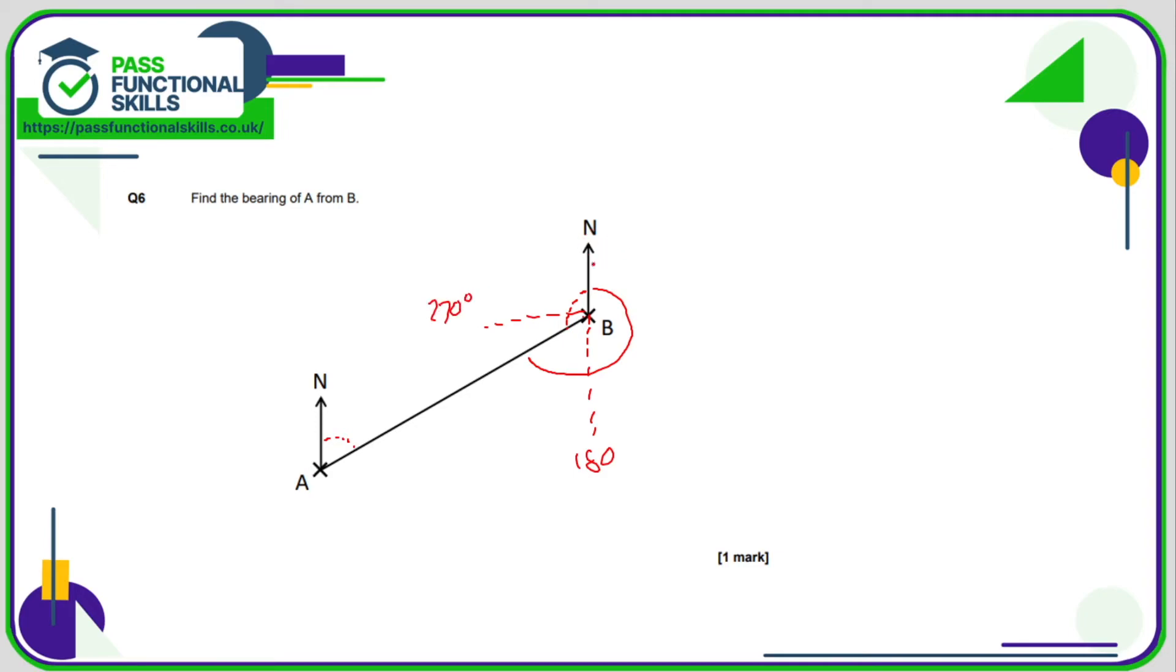Probably the easiest thing to do would be to extend this line using a ruler, measure this angle here and add 180 degrees to it. But in total, it's 240 degrees because this angle here is 60 degrees. This angle here is also 60 degrees. So you could just add 180 to that one. And that's another way to work out that bearing.